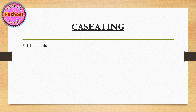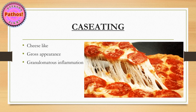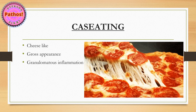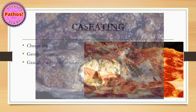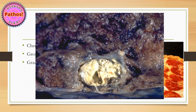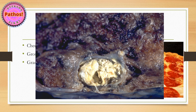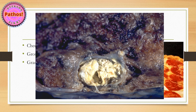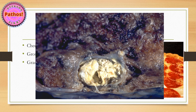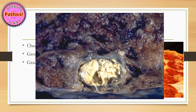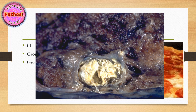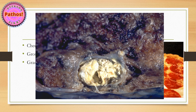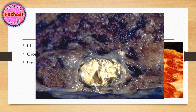Next is caseating. The term caseating basically means cheese-like. This term is used on gross examination and is mostly accompanied by granulomatous inflammation. This is a gross picture of a lung with caseous necrosis. Sometimes you can get very solid-appearing areas depending on how much the organ has been fixed, but if you scoop a little out you'll see that crumbling cheese. On microscopy you will see just necrotic granular pink material — no cells. This is caseous necrosis.